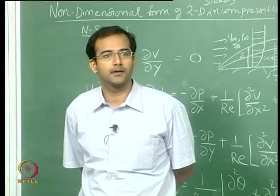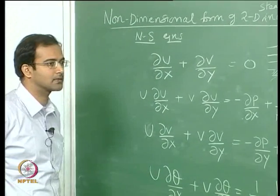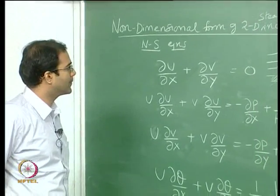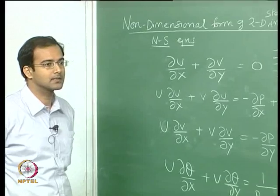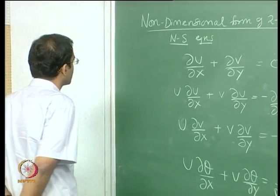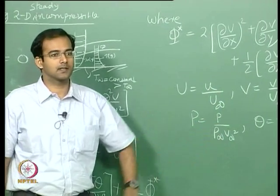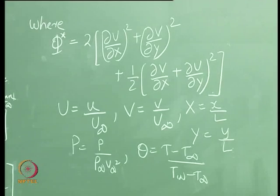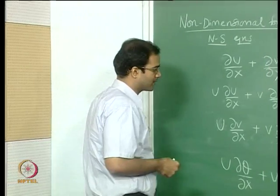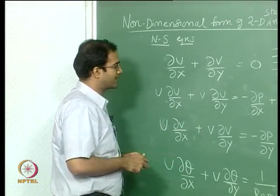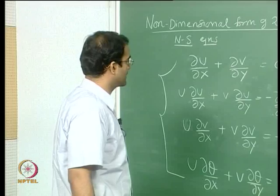Good morning. Today we will continue the derivation of the non-dimensional form of the Navier-Stokes equations. The course deals mostly with two-dimensional incompressible flows. In the last class I gave you the non-dimensional variables, and if you plug them into the steady-state 2D incompressible dimensional Navier-Stokes equations, you end up with this set of non-dimensional steady-state incompressible Navier-Stokes equations for two dimensions.